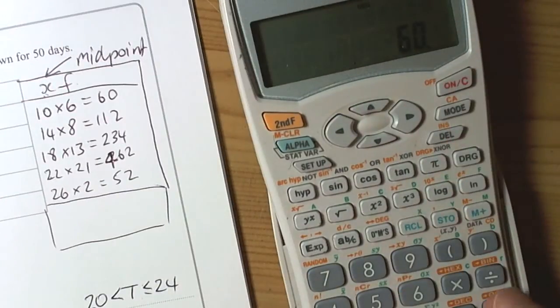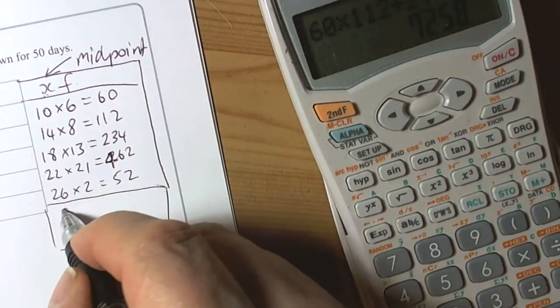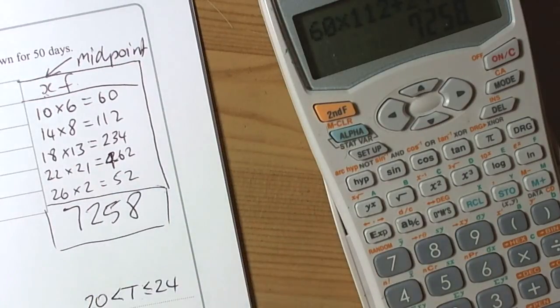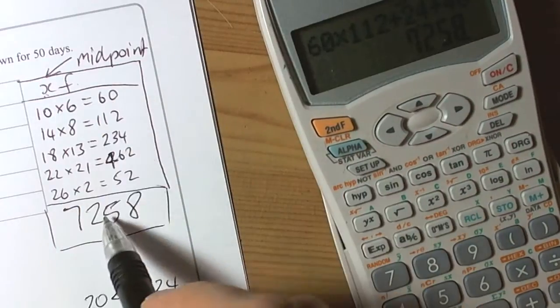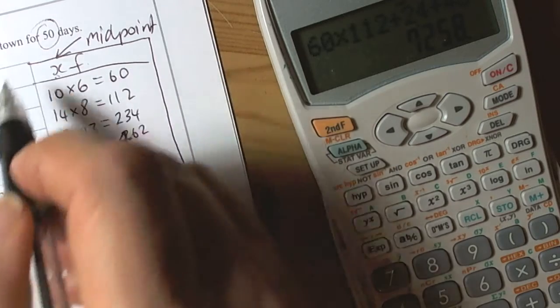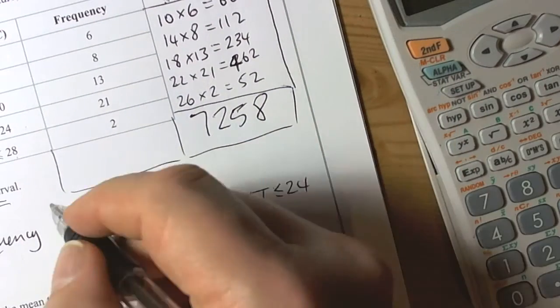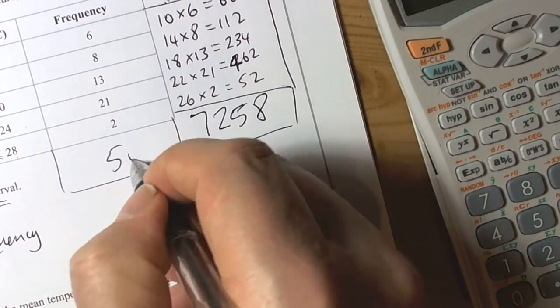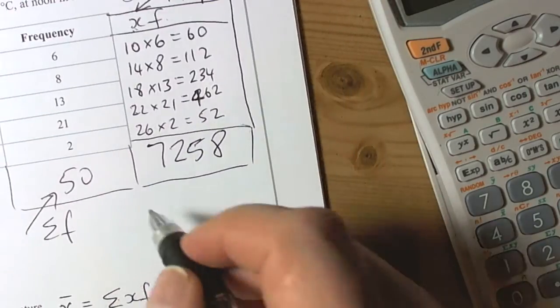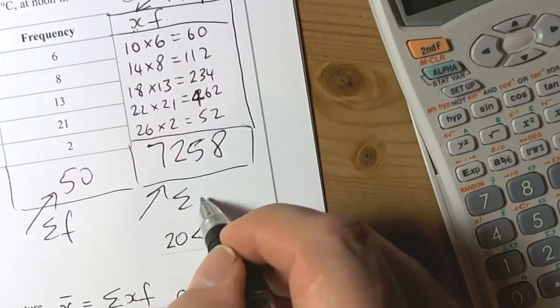The formula is telling us to take the total of all the xf's, so we need to get our total there. So we've got to add up: 60 plus 112 plus 234 plus 462 plus 52. And that's the total of all the temperatures.